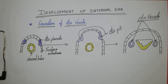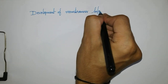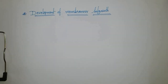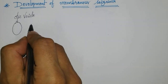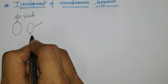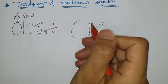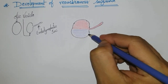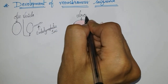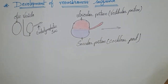This completes the formation of the otic vesicle. We will now proceed to the development of the membranous labyrinth. The otic vesicle is the primordium of the membranous labyrinth. It then grows and forms the various parts of the membranous labyrinth of the internal ear.